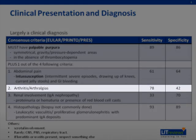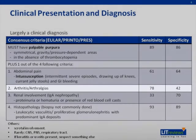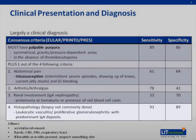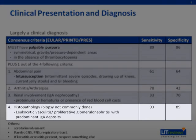Joints may also be involved in HSP and present as transient or migratory arthritis or arthralgia. The joint pain is oligoarticular, and the joint involvement is non-deforming and usually presents on lower joints. Renal involvement, identified by the presence of proteinuria, hematuria, or red blood cell casts, may also be present. The last criterion listed is the only one that is not a clinical finding. Histopathology showing inflammation of the blood vessel or organ tissue with a predominance of IgA can also be used to diagnose HSP.